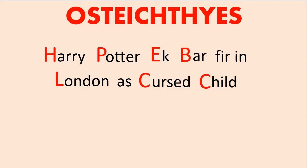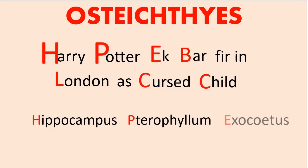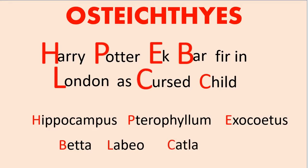Harry's H is for Hippocampus. Potter's P is for Pterophyllum. Ek baar's E is for Exocoetus. Baar's B is for Betta. London's L is for Labeo. Cursed child's first C is for Catla. And second C is for Clarias. Harry Potter ek baar phir in London as cursed child.